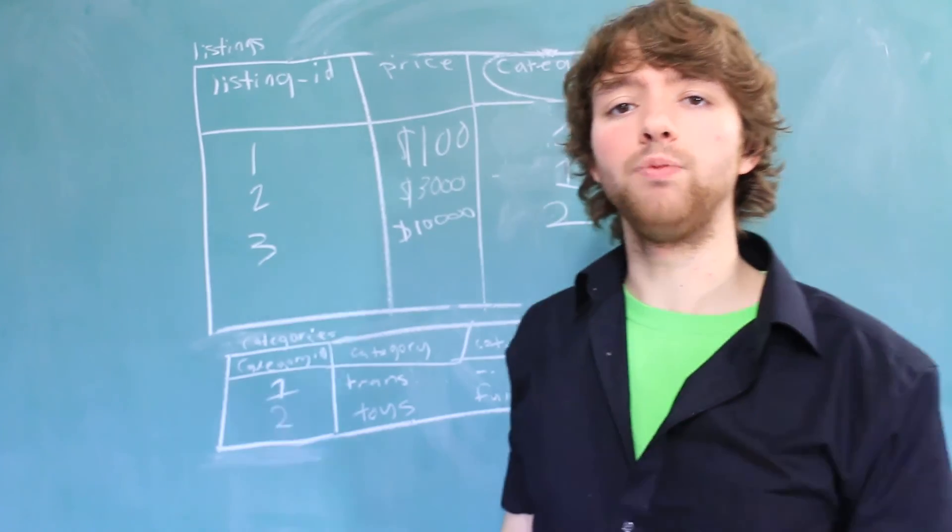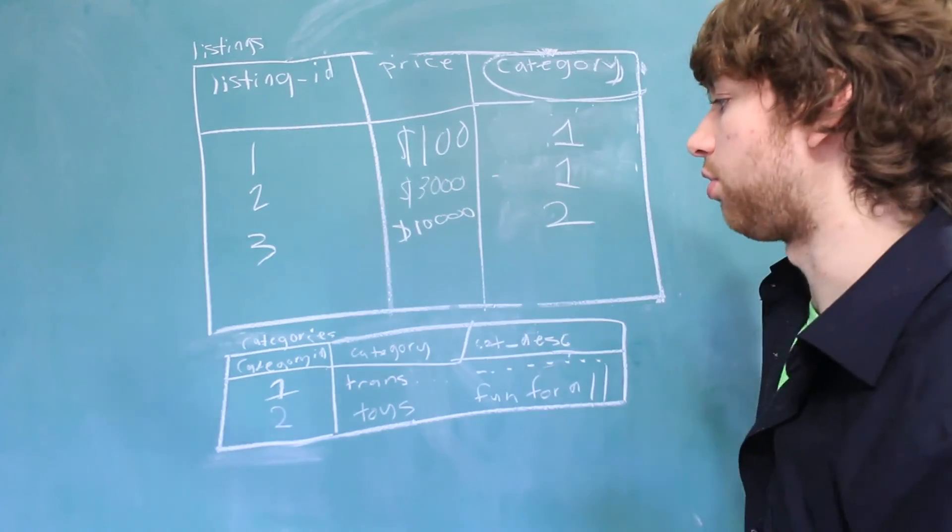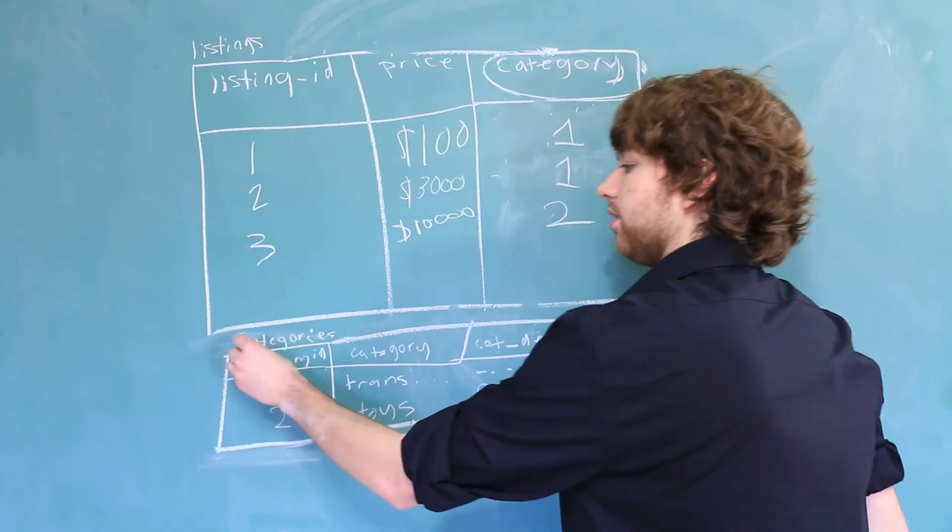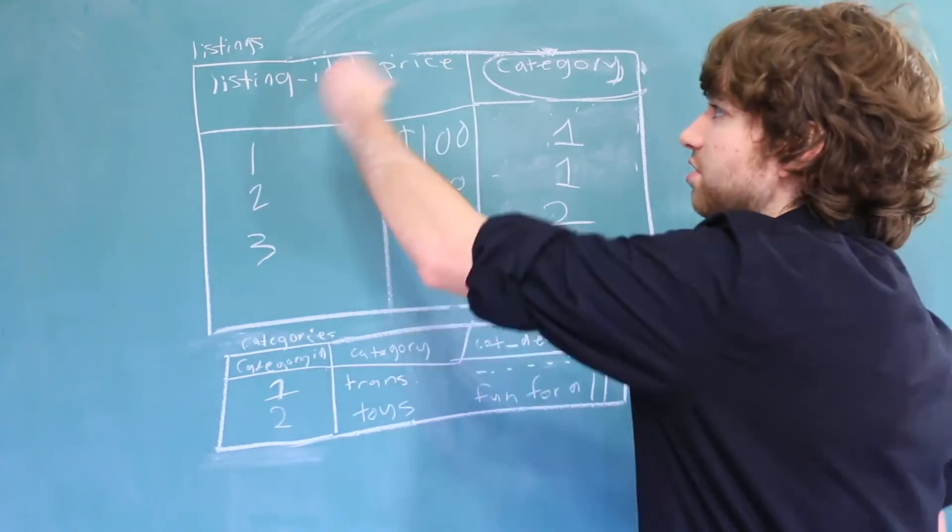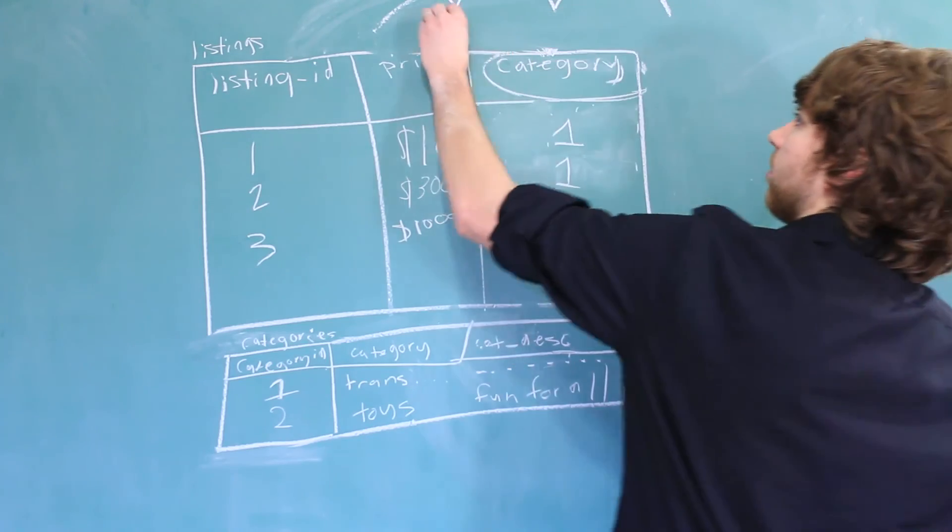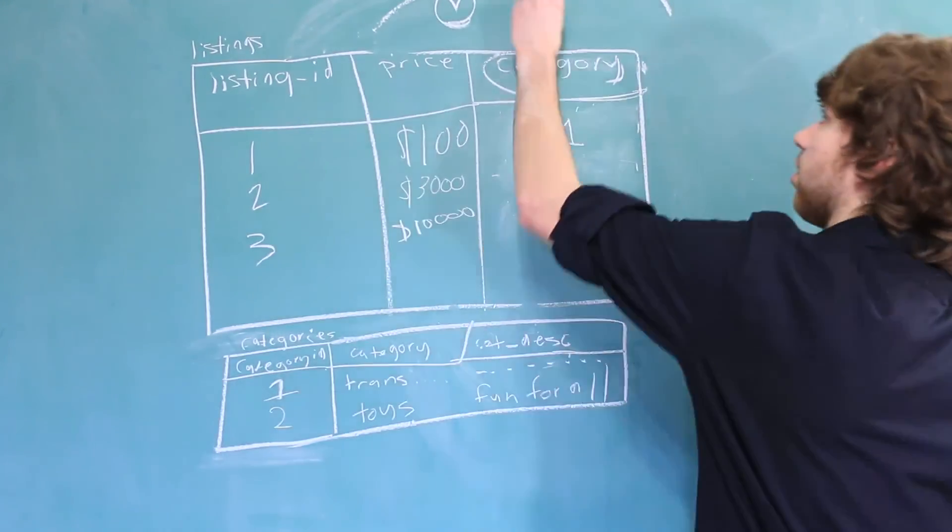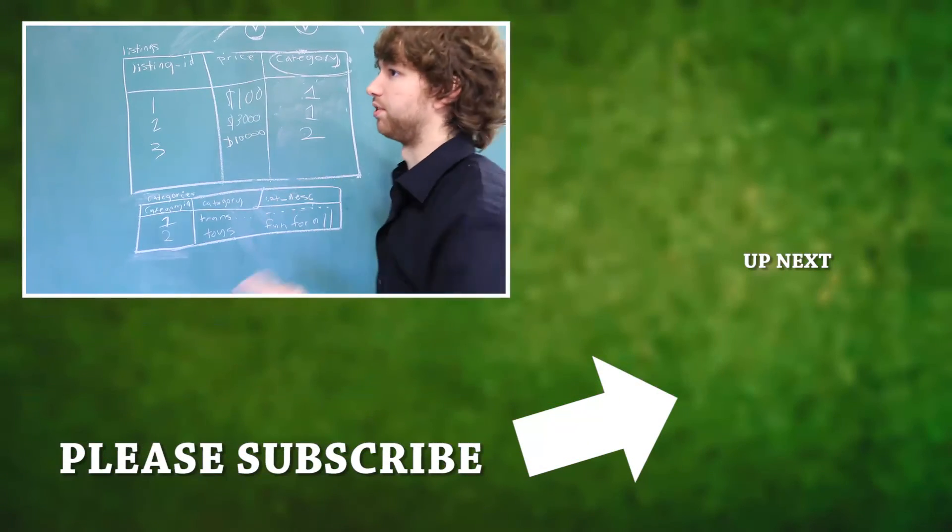That's it for third normal form. Hopefully you guys understand that whenever you have a transitive dependency, all you have to do is grab what's closest to the primary key. So you can have multiple jumps, for example. You want to grab this one and put it into its own table. And the chances are you'll have this problem again. And you'll need to put that into its own table.